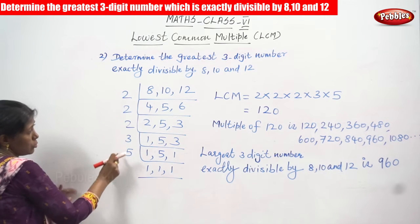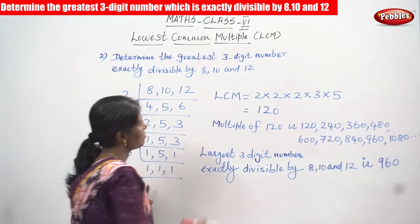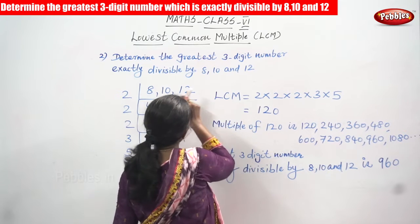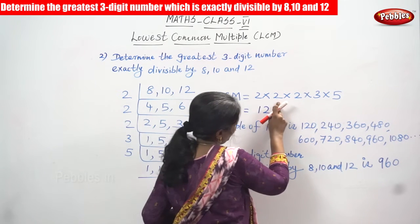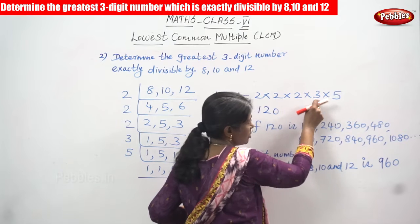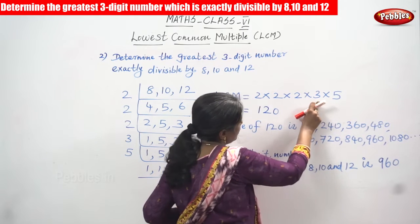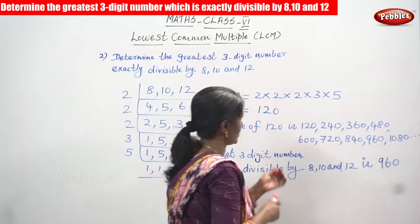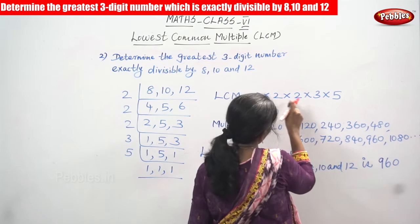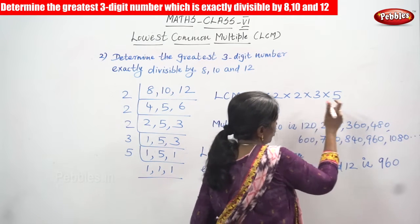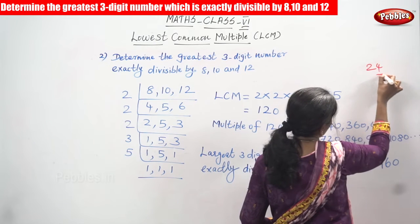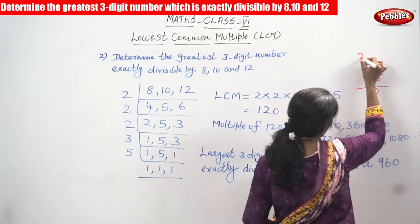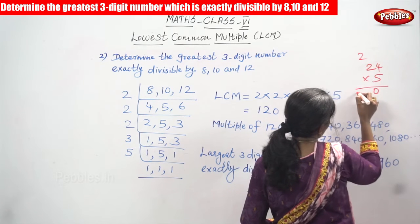Now we write all the divisors as the LCM: 2 × 2 × 2 × 3 × 5. This is the LCM — the lowest common multiple — of 8, 10, and 12. Computing: 2 × 2 = 4, 4 × 2 = 8, 8 × 3 = 24, 24 × 5 = 120. So the LCM of 8, 10, and 12 is 120.